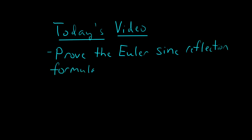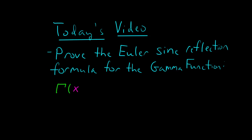This formula for the Gamma Function states the following: Gamma of x times Gamma of 1 minus x equals pi over sine of pi times x. So that's what we're going to prove today.